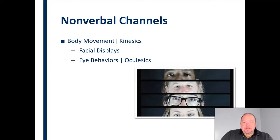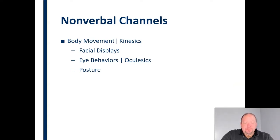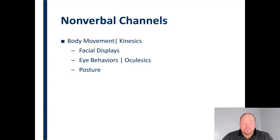Another body movement we use to communicate nonverbally is posture. Are we standing up straight? Are we slouching? Are we turned away from somebody? Our general posture sends a message about how we feel about that message, how we feel about that person, how we feel about being in that conversation — all these different relational cues.